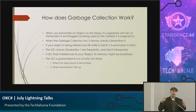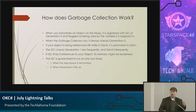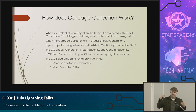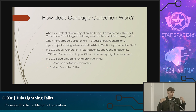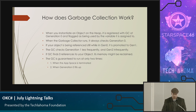Every time garbage collection runs, it checks generation zero and asks: are there any pointers to it? If there aren't, it cleans it up. If it checks a couple of times and there have always been pointers to it, it promotes the object to generation one and checks generation one less frequently. Eventually it can also promote to generation two. There are three total generations in .NET garbage collection.